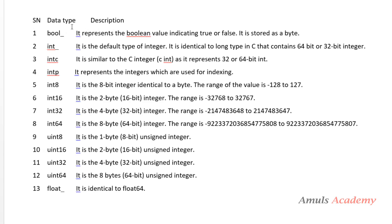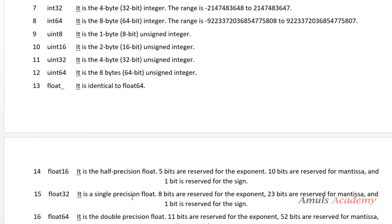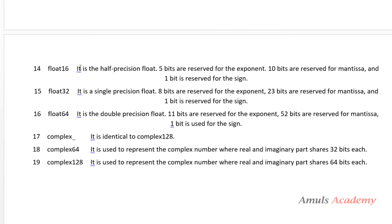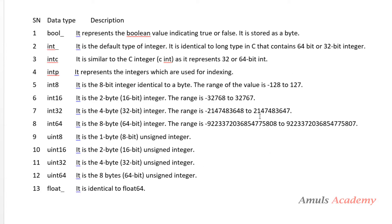Bool stands for boolean value. Int is the default type of integer. Int C, Int P, unsigned integer 16, 32, 64. Float is identical to float 64. Float 16, float 32, float 64. Complex, complex 64, and complex 128. These are the data types, and here we can see the description.